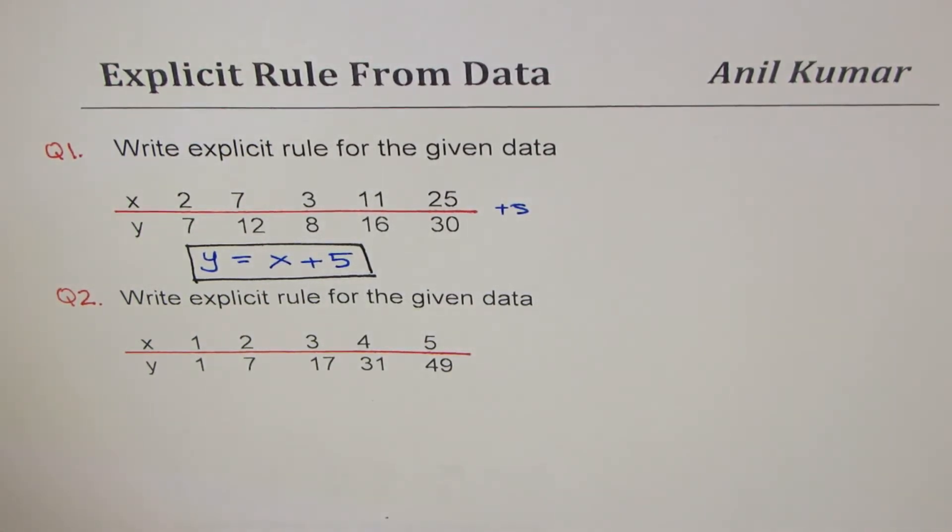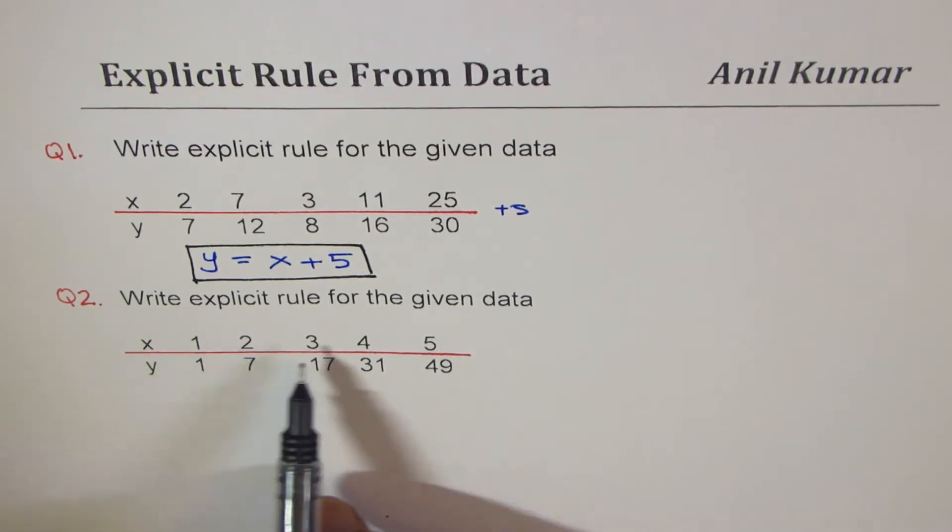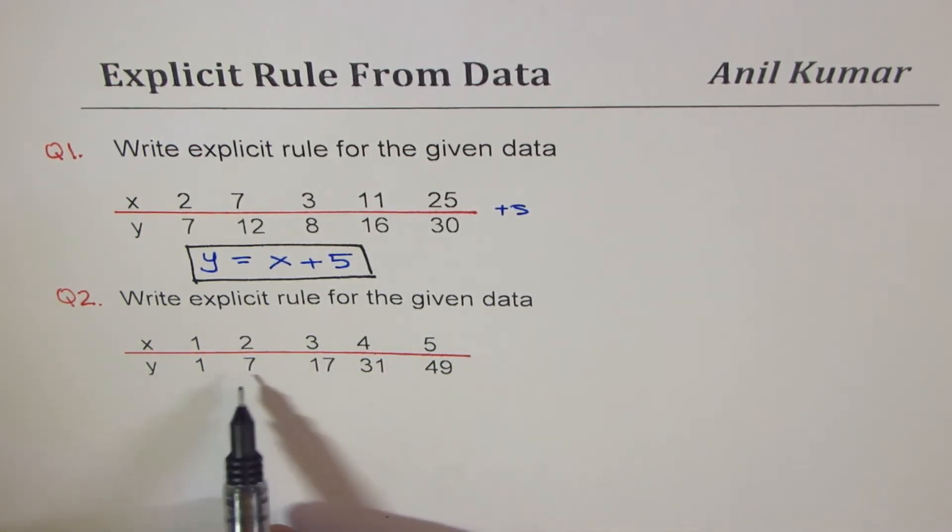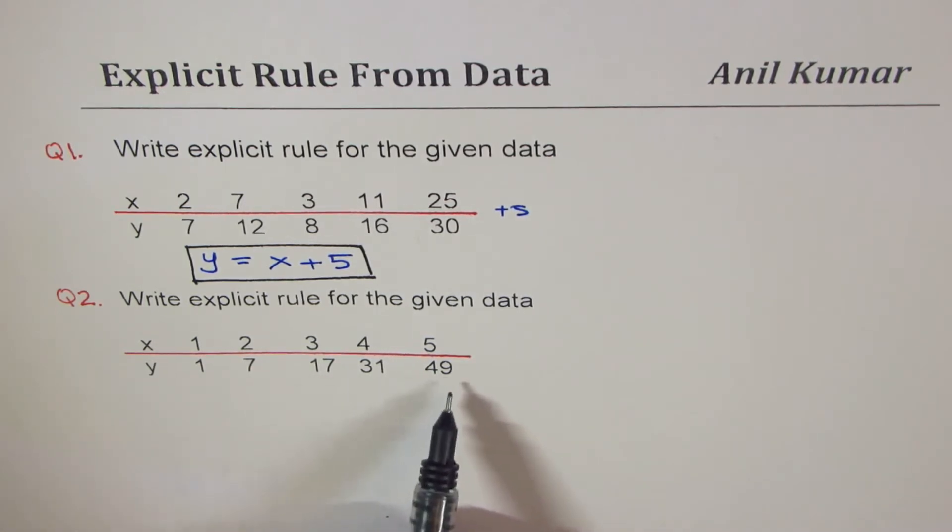Now let's look into question number two. Here we have x values which are increasing by one, but the y values are increasing by much greater number, so definitely it does not represent a linear function. So it could be any other polynomial function.